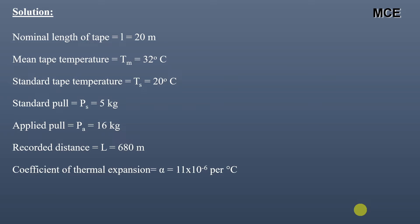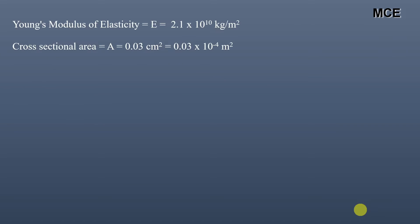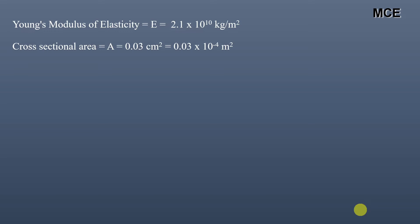Coefficient of thermal expansion α = 11×10⁻⁶ per degree centigrade. Young's modulus of elasticity E = 2.1×10¹⁰ kg/m². Cross-sectional area A = 0.03 cm², which equals 0.03×10⁻⁴ m². Weight of tape = 10 g/cm³, or equivalently 10×10³ kg/m³.